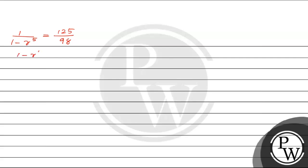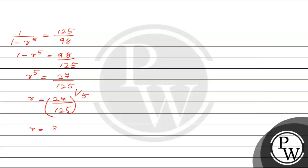So 1 minus R to the power 5 equals 98 divided by 125, which is 27 by 125. To find the value of R, we get R equals 27 by 125 to the power 1 by 5. Here 27 and 125 can be written as 3 by 5 cubed, whole to the power 1 by 5. So R equals 3 by 5, that is R equals 3/5.